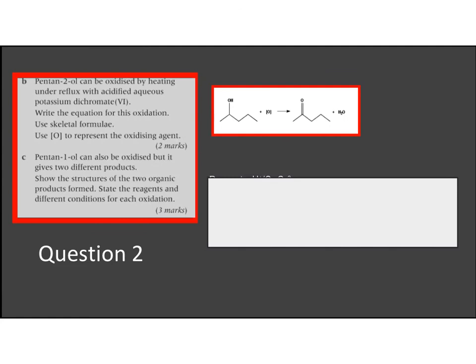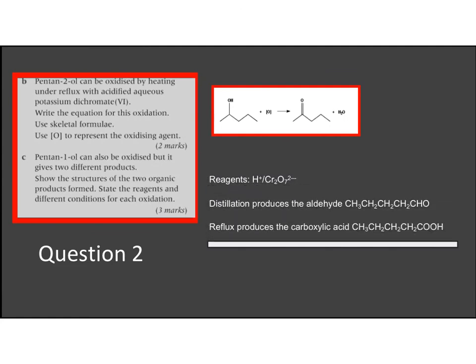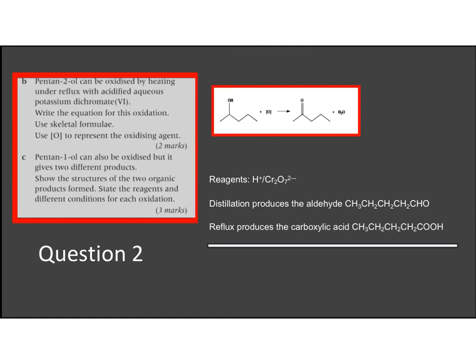Those two different products will of course be an aldehyde if we distill the product off. But if we reflux, it will go to the carboxylic acid. So our two products will be pentanal and pentanoic acid. And the reagents of course, acidified Cr2O7²⁻.